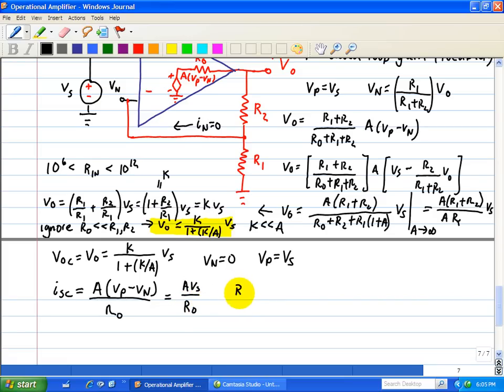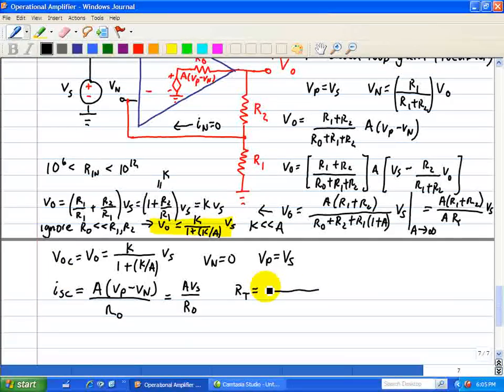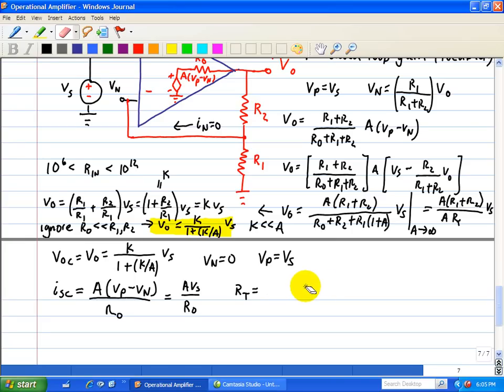Now we calculate our Thevenin equivalent based on these two parameters, VOC and ISC. Because we know that RT is equal to the ratio of VOC divided by ISC.